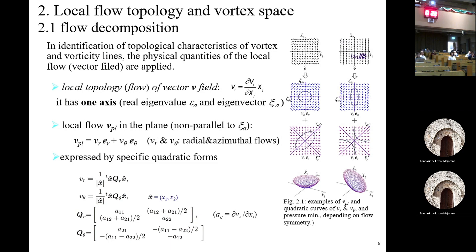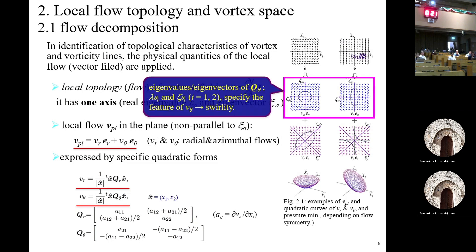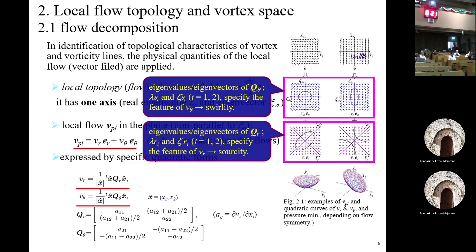Local topology of a velocity field can be specified by its gradient tensor. Since it has at least one real eigenvalue and eigenvector, local flow in an arbitrary plane non-parallel to the real eigenvector can be decomposed into radial and azimuthal components, expressed by specific quadratic forms. The eigenvalues and eigenvectors of the respective quadratic forms specify the features of the azimuthal component and the radial component.